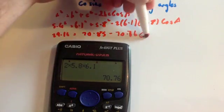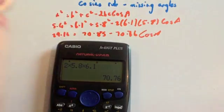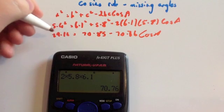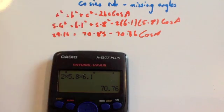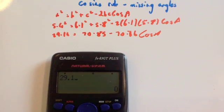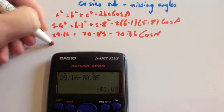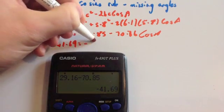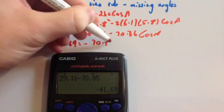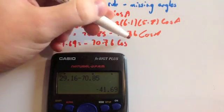Let's rearrange this. We're going to do 29.16 - 70.85, so 29.16 - 70.85 = -41.69 = -70.76 cos A.